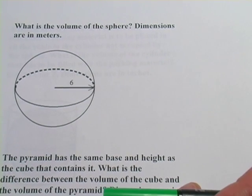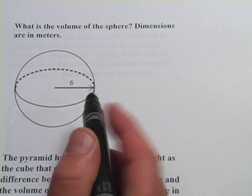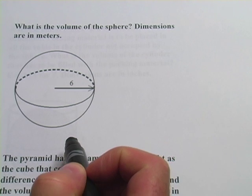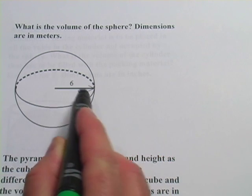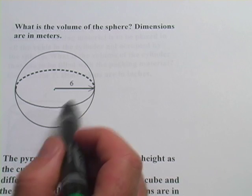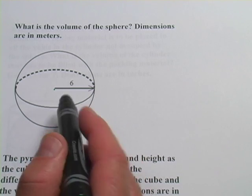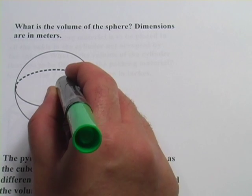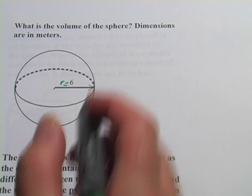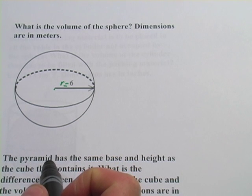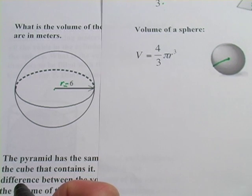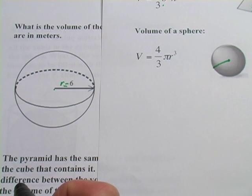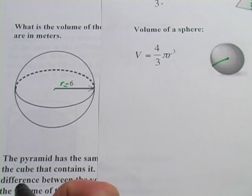This first problem asks: what is the volume of the sphere? Dimensions are in meters. They give us a line with a six on it going from the center of the sphere to the edge, so that is the radius. The radius equals six. If you've already forgotten what the volume of a sphere is, you go to the internet and look that up.